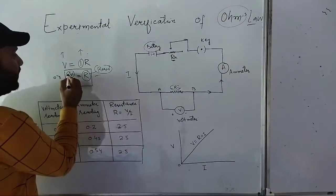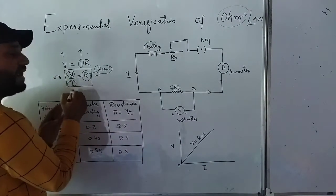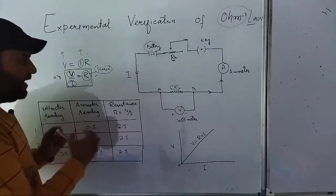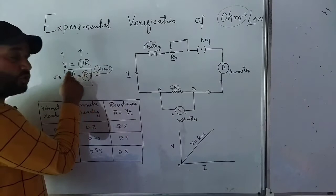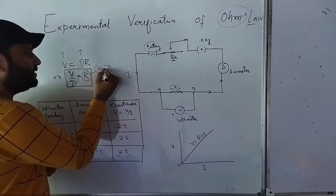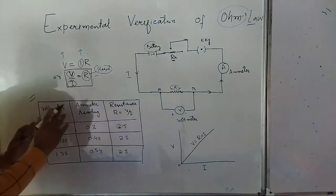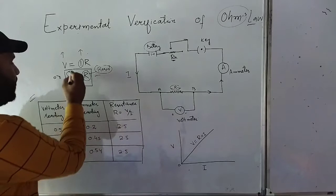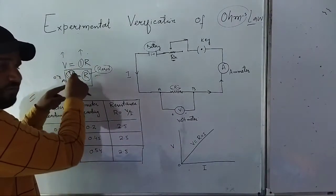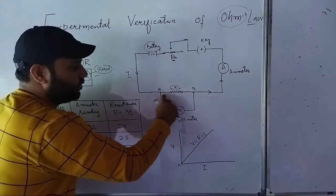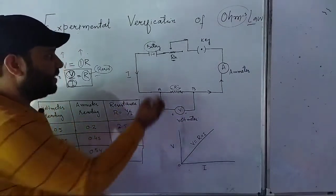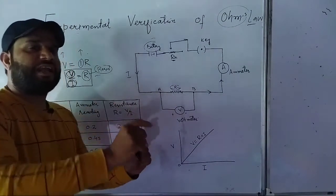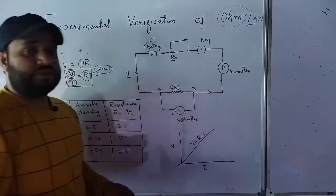When we have to experimentally verify Ohm's law, what we have to observe is that the ratio of potential difference, i.e., V/I, should always be equal to R. Because from this equation, the ratio of potential difference to the current is always a constant called resistance. We have made a table here - we can prove this from the experimental setup. We have to change two values: one is V and the other is I, and check whether resistance R stays constant or changes.